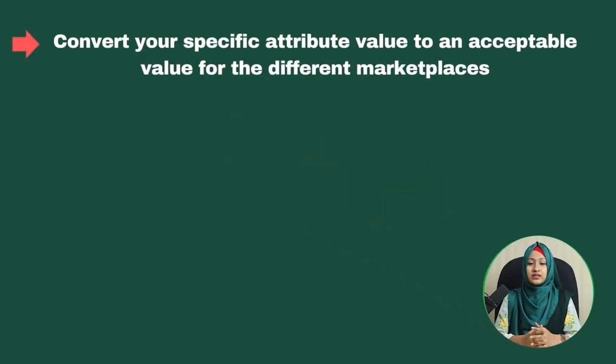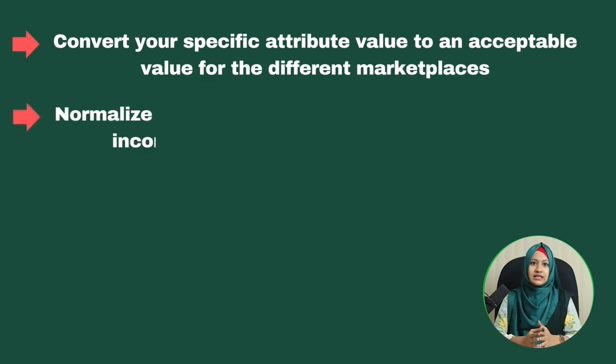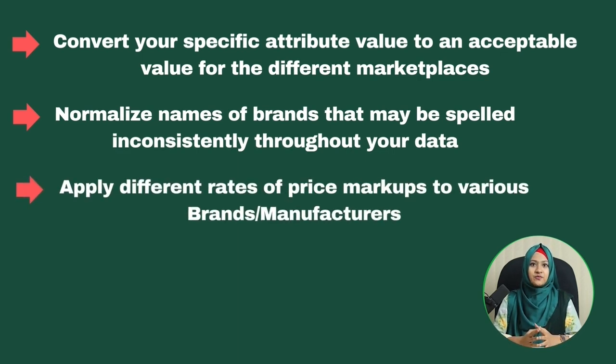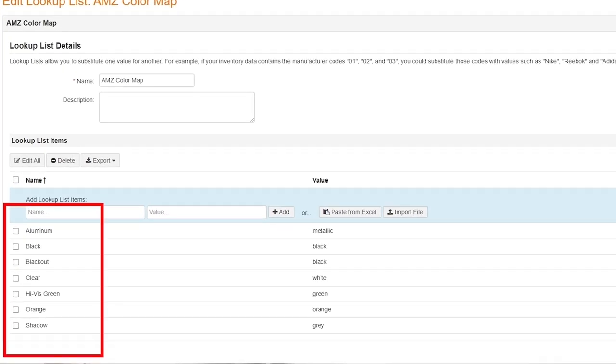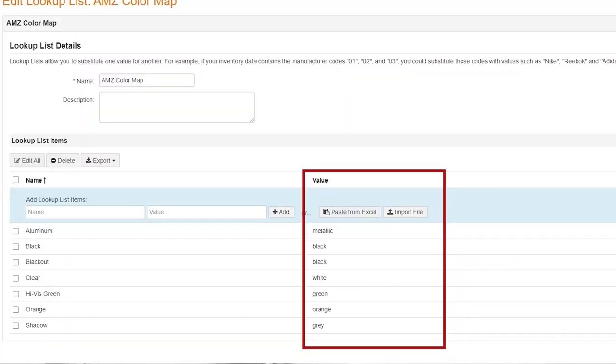By using a lookup list, you can easily convert your specific attribute value to an acceptable value for different marketplaces, normalize names of brands that may be spelled inconsistently throughout your data, and apply different rates of price markups to various brands or manufacturers. The lookup list contains two columns of data: the first column represents a value you already have in your data, and the second column represents the value it should be converted into.